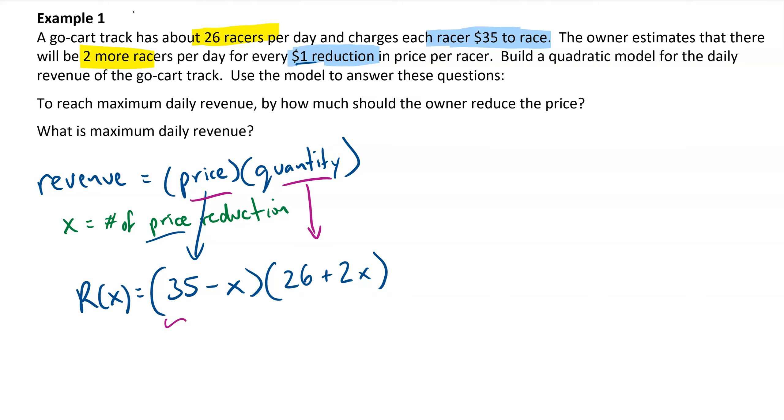Now we could multiply this out to create a standard form expression, but it's actually pretty close to intercept form, close enough that I can easily use it to find the x-intercepts. The x-intercepts are going to come from setting that expression, (35 - x)(26 + 2x), equal to 0, because when the function value equals 0, that's when we get the x-intercepts.